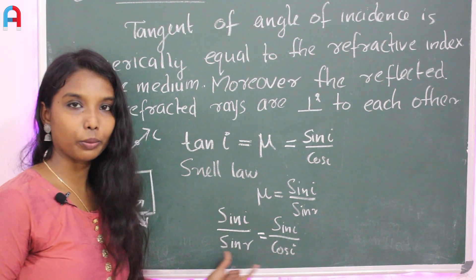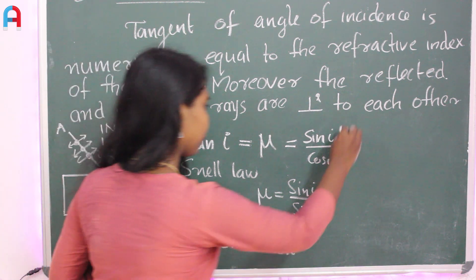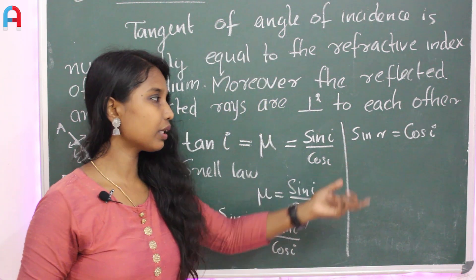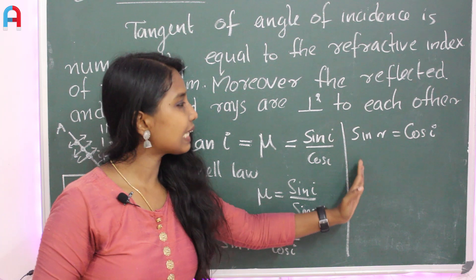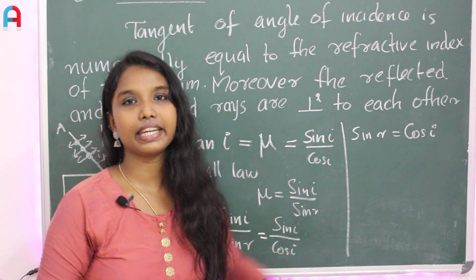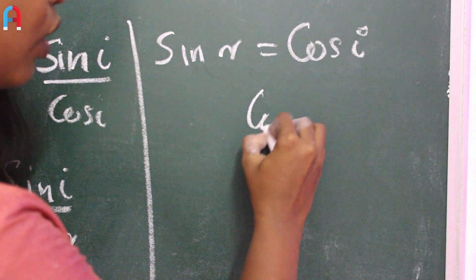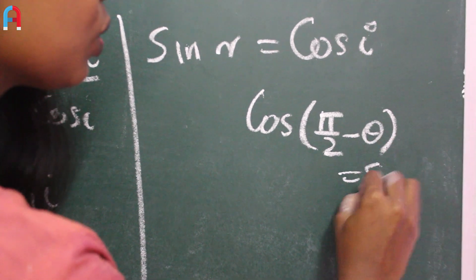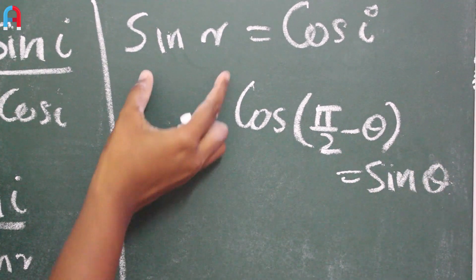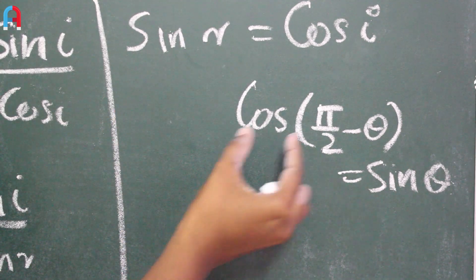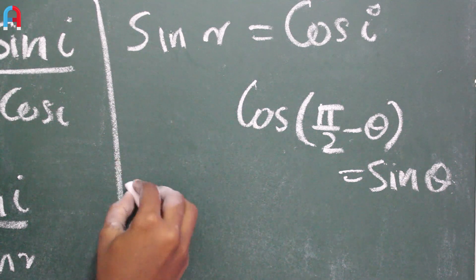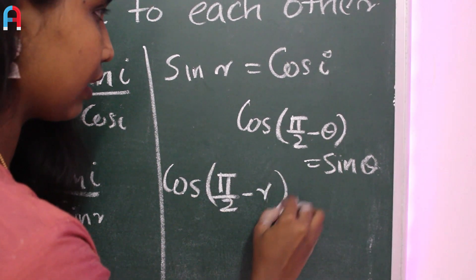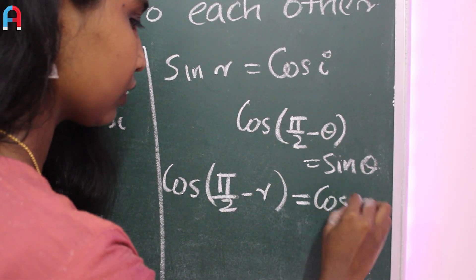The numerator is equal to denominator, so the fractions are equal. Therefore sin r equals cos i. We know that cos of (pi/2 minus theta) equals sin theta. So we get cos of (pi/2 minus r) equals cos i.